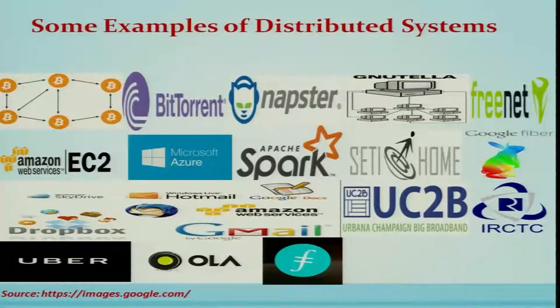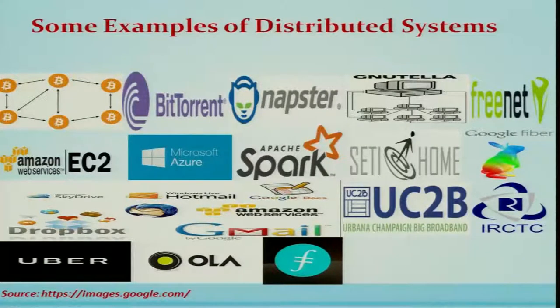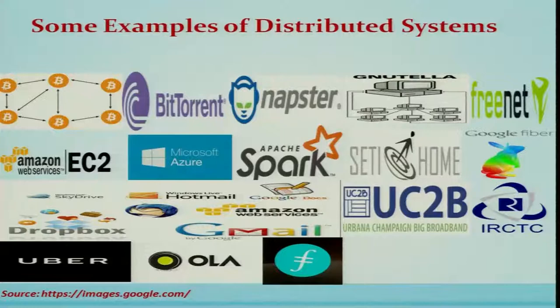Some examples of distributed systems that you normally use are shown here in the form of icons. Large companies like Microsoft use distributed computing principles in Azure, as already seen, along with Gmail, Imagenet, Spark, and others. One example worth examining is IRCTC, which you use for booking railway tickets online. This online railway reservation is a very complicated application of a distributed system, especially when it comes to Tatkal reservation.